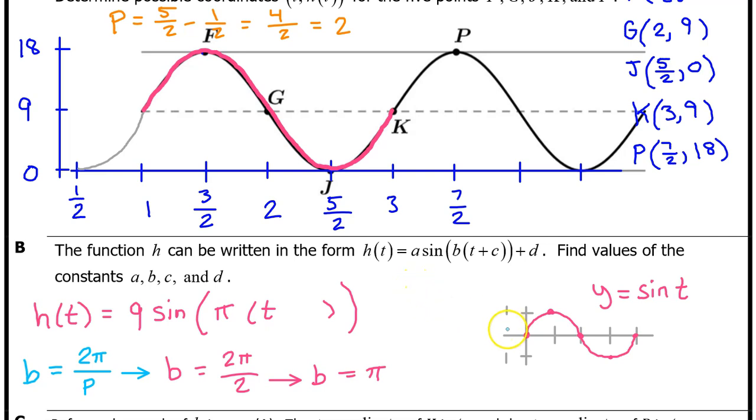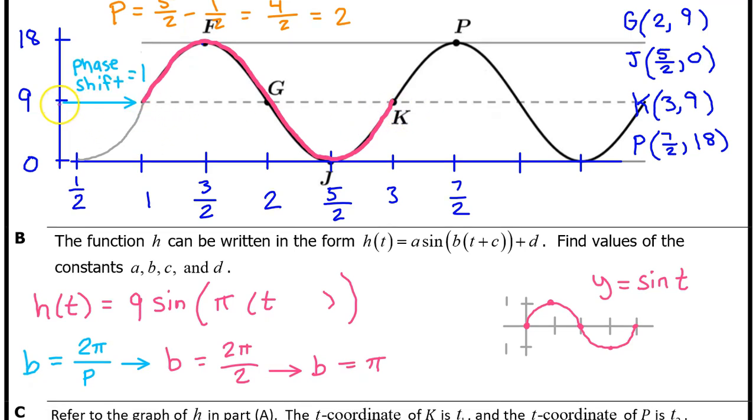In the context of periodic functions, a horizontal translation is called a phase shift, and the c value will be the opposite of the phase shift. Notice that the parent function starts at 0, whereas this period of h of t starts at 1. That means there has been a phase shift of positive 1, which means the value of c is negative 1. In short, the c value is always the opposite of the input value of the starting point, the beginning of the period that you selected. The d value always corresponds to the midline. So, d is 9.